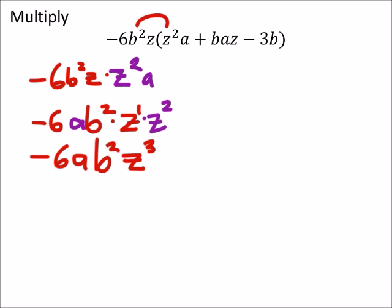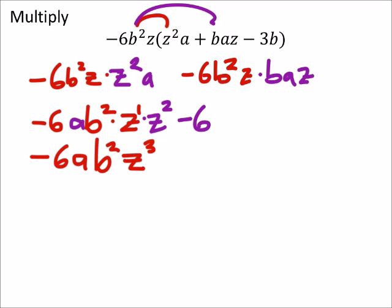The next distribution, I've got the same thing. This negative 6b squared z. And I'm going to multiply it by b, a, z. The negative 6 doesn't have anything else to multiply with. And if I rearrange this, I can put the a in the front. But I've also got a b squared and a b and then a red z and a purple one.